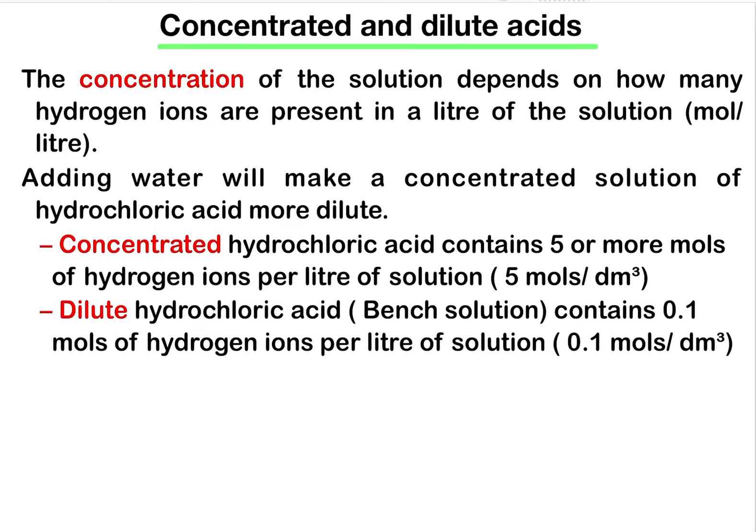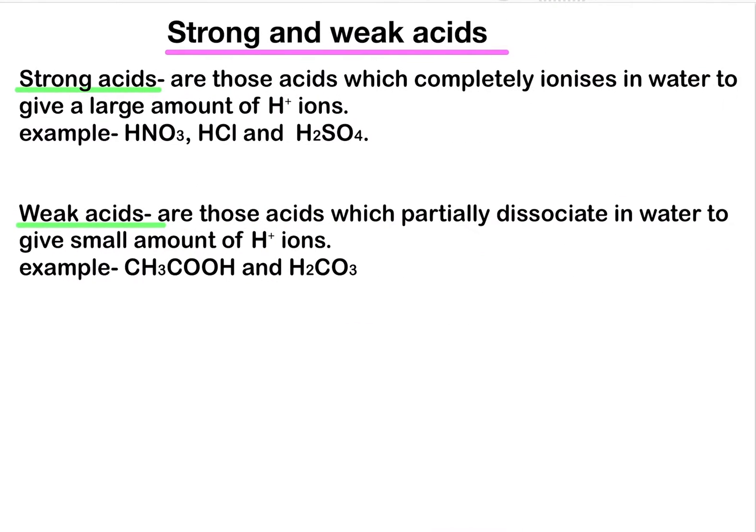Strong acids are those acids which completely ionize in water to give a large amount of H⁺ ions. Examples include nitric acid, hydrochloric acid, and sulfuric acid. Weak acids are those which partially dissociate in water to give a very small amount of H⁺ ions. Examples are acetic acid and carbonic acid.